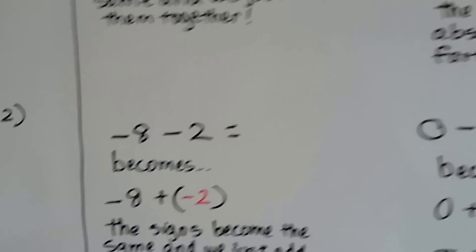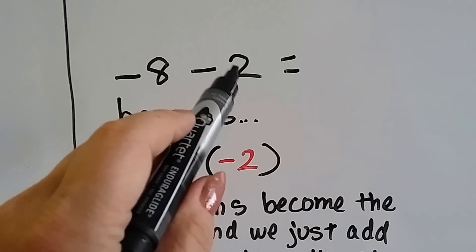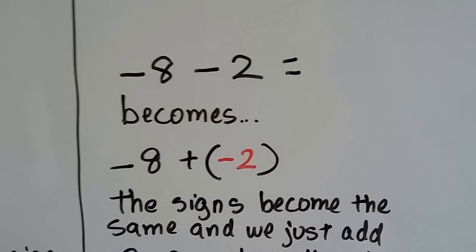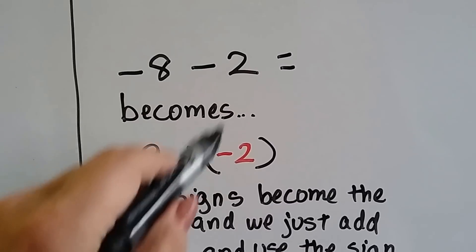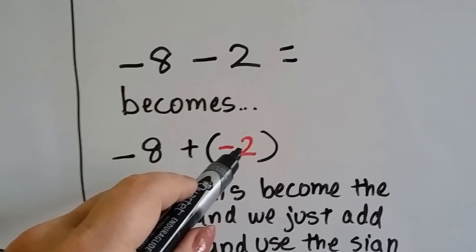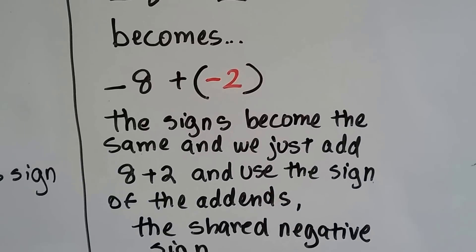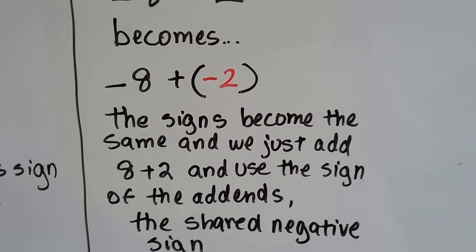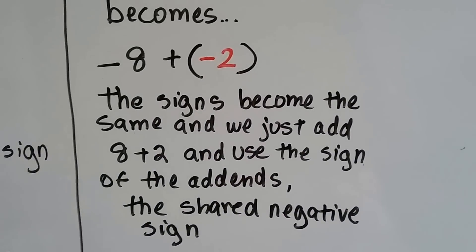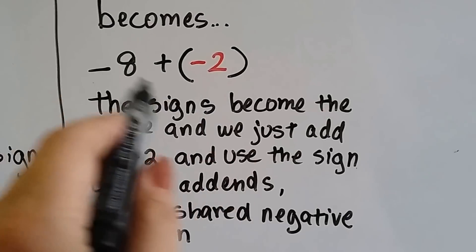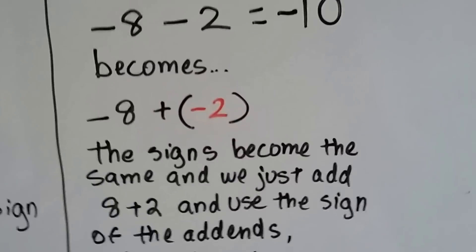Let's try another one: negative 8 minus 2. We know that's a positive 2 because it's not in parentheses. That minus sign is going to become a plus sign because we're adding the opposite, and the opposite of a positive 2 is a negative 2. Now we've got negative 8 plus negative 2. The signs become the same — we just add 8 and 2, we get 10. And we take the sign of the shared addends. They're both negative, so our answer is negative 10.